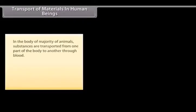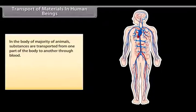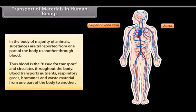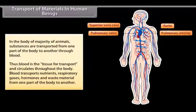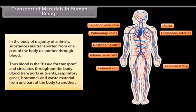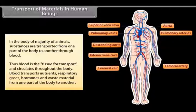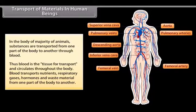In the body of the majority of animals, substances are transported from one part of the body to another through blood. Blood is the tissue of transport and circulates throughout the body. Blood transports nutrients, respiratory gases, hormones and waste material from one part of the body to another.